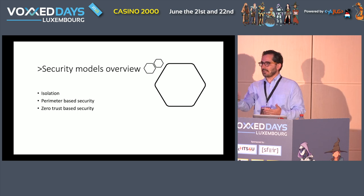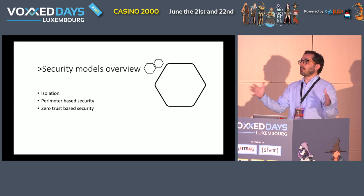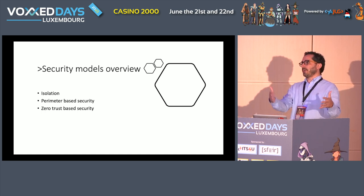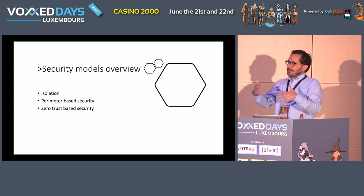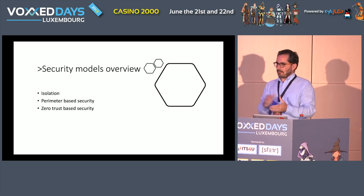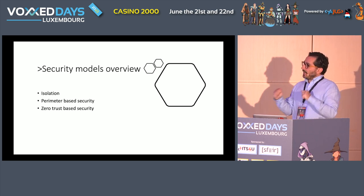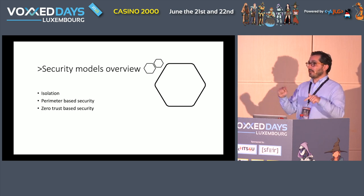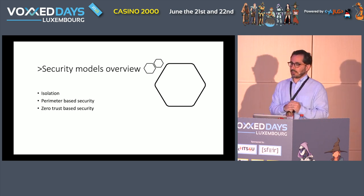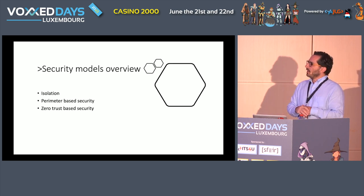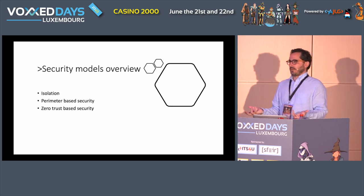If we go to Windows-based architectures, what we call a domain is your perimeter. Your DMZ zone is like the gatekeeper to that domain. I'd like to spend a little time reflecting on the differences between perimeter-based security and zero trust-based security. The best example I can come up with is how you secure your house.